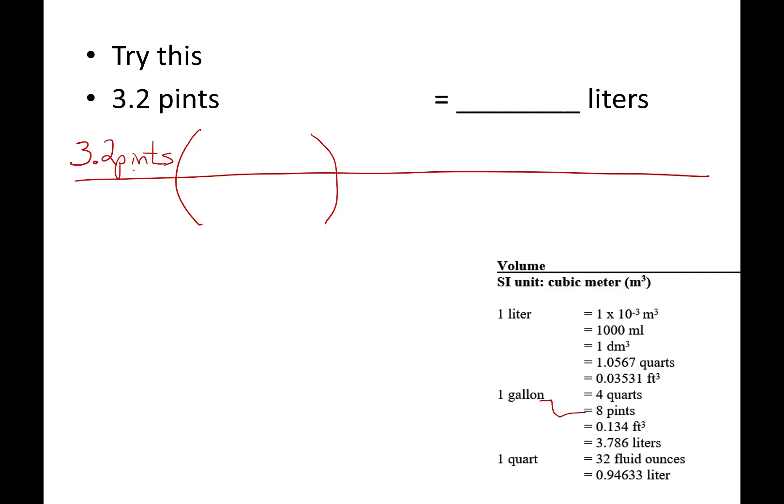I chose to go pints to gallons. I want to get rid of pints, so where do I put it? Bottom. I'm going to keep gallons, put that on top. One gallon, eight pints. Cross out as you go. Do not pick up your calculator yet.